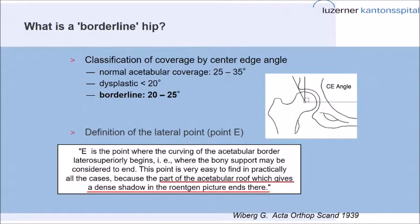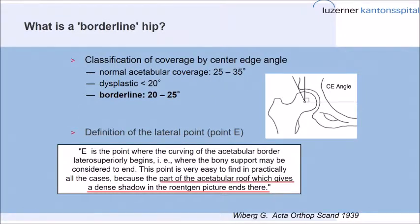What exactly is a borderline hip? It's a radiographic classification that was put up by Wiberg almost 80 years ago. He classified the hip as normal when the coverage was above 25 degrees, dysplastic when they were less than 20 degrees, and borderline those in between.